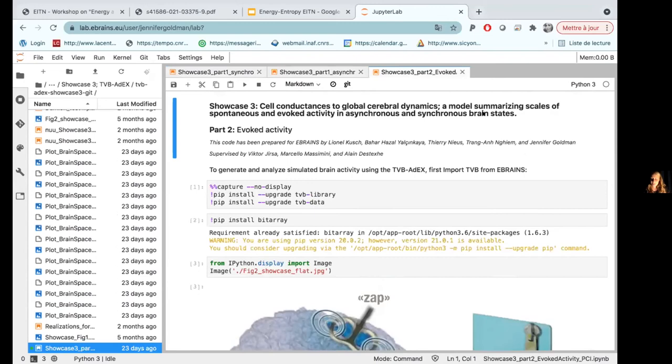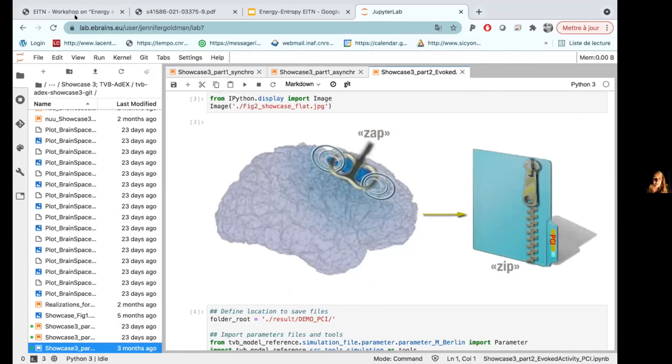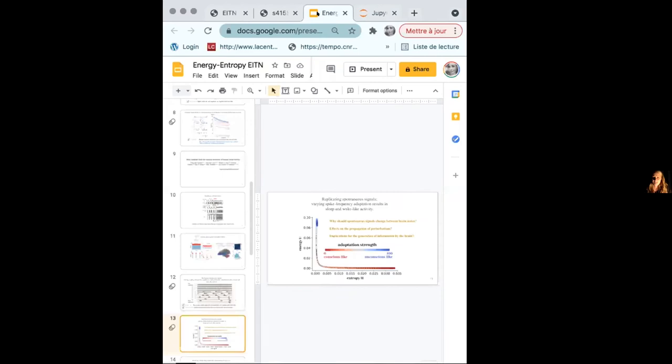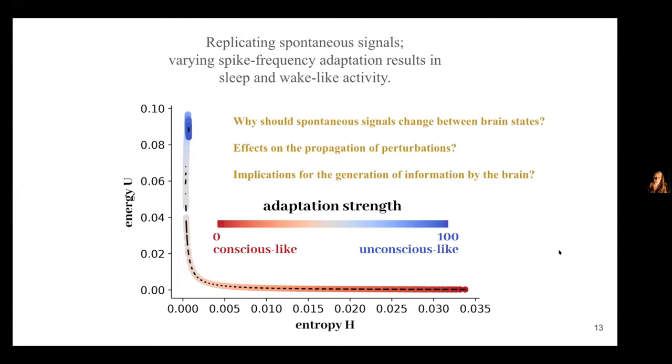Another thing that we did was to reproduce this perturbational complexity index. So we've run the model several times to have enough realizations for statistics. And in fact, that will bring me back to my slides. So if we, using this TVB ADEX model, change the adaptation strength, we can reproduce this relationship between the energy and the entropy. So it looks like changes in the biophysical mechanisms that are related to differences in neuromodulation can account for the differences in the spectral energy and entropy. This change, this correlated change in the complexity and the amplitude of the signal.